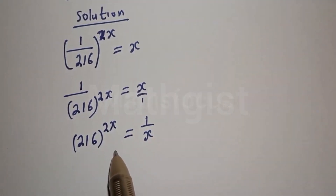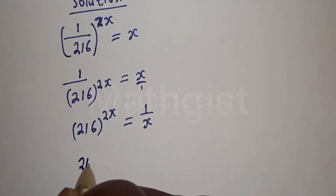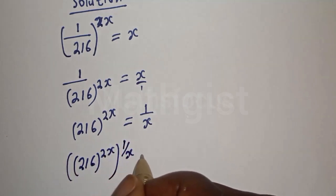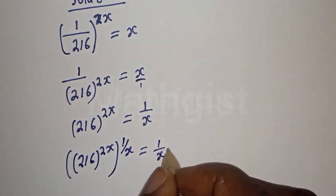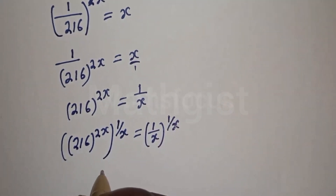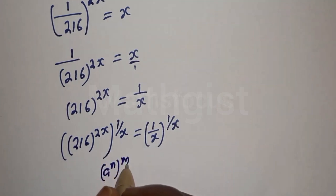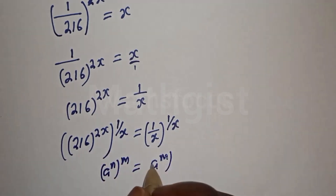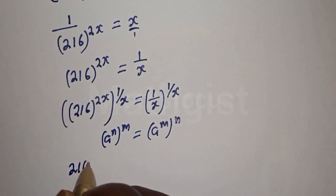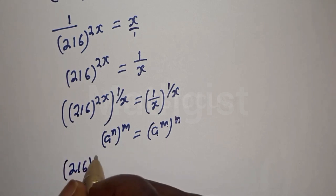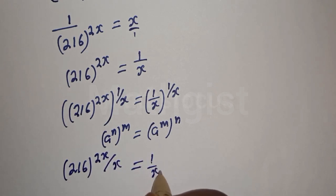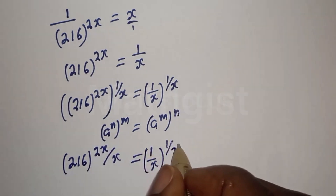At this point we can multiply the exponents of both sides by one over x. That gives us 216 raised to power 2x, multiplied by one over x, equals one over x multiplied by one over x. This simplifies to 216 raised to power 2x over x equals one over x to the power of one over x.